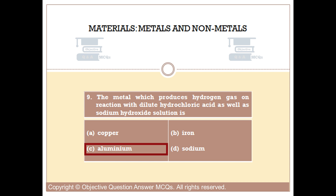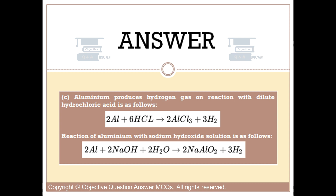The right answer is option C. Aluminium produces hydrogen gas on reaction with dilute hydrochloric acid, and also reacts with sodium hydroxide solution to produce hydrogen.